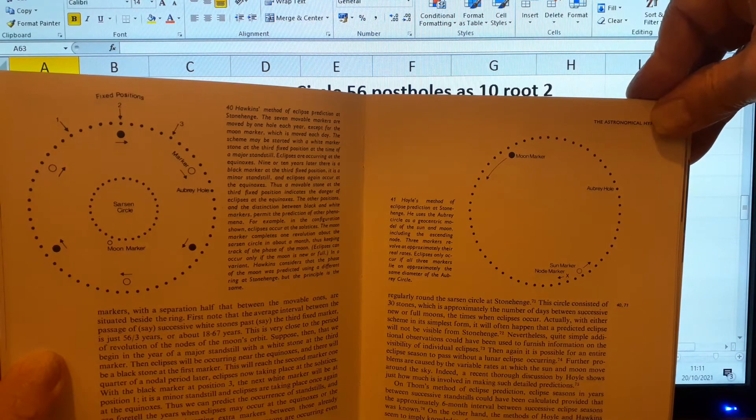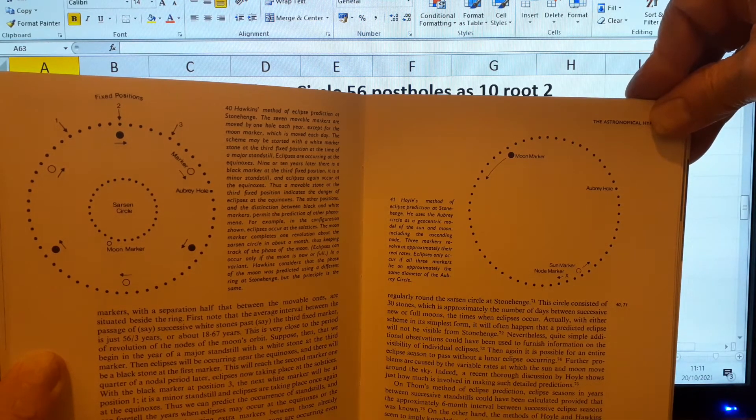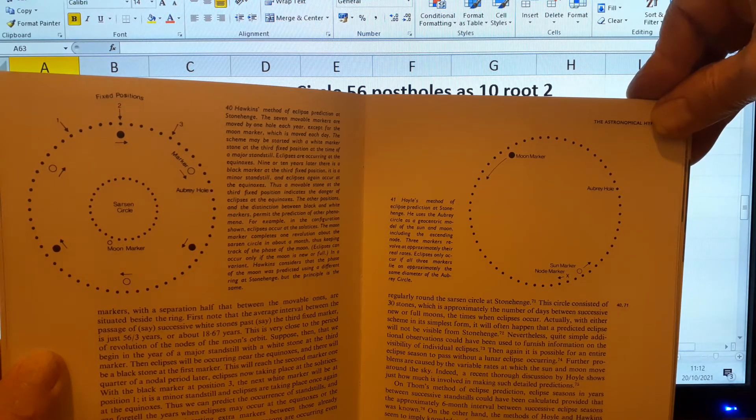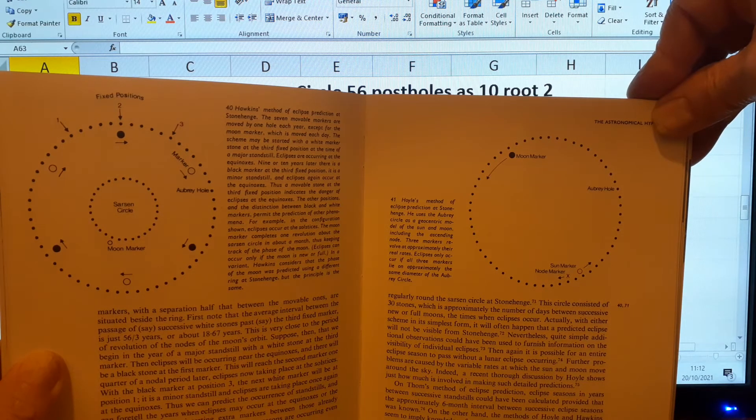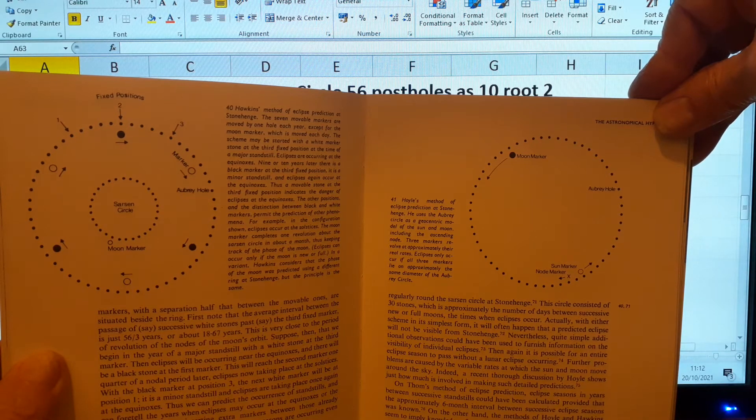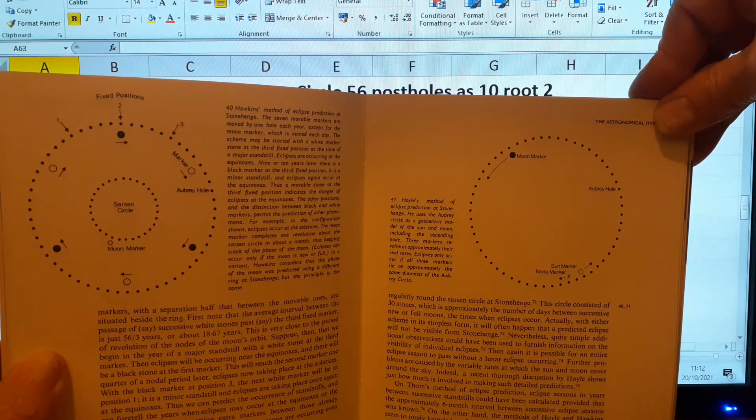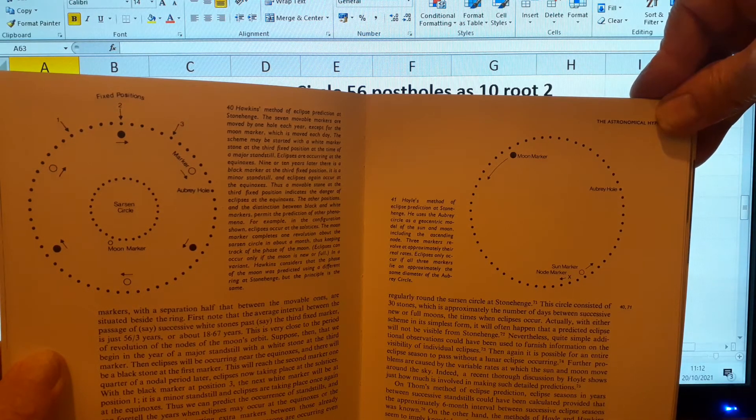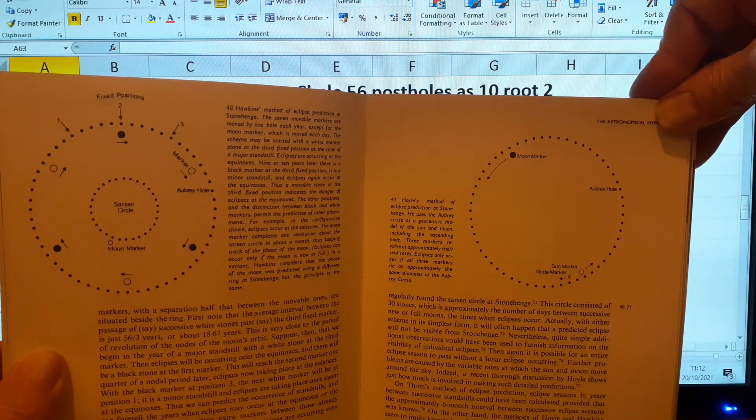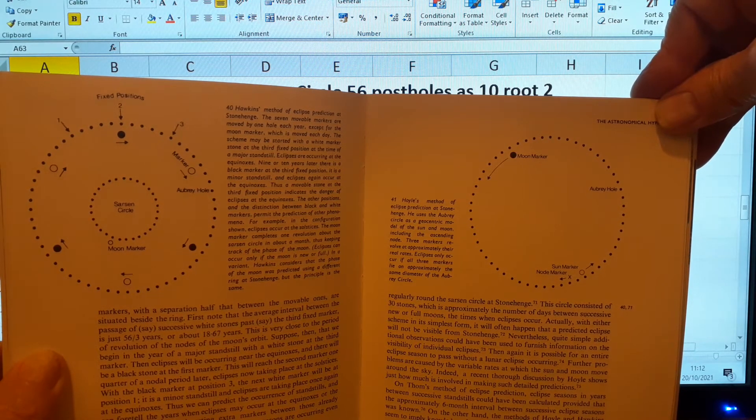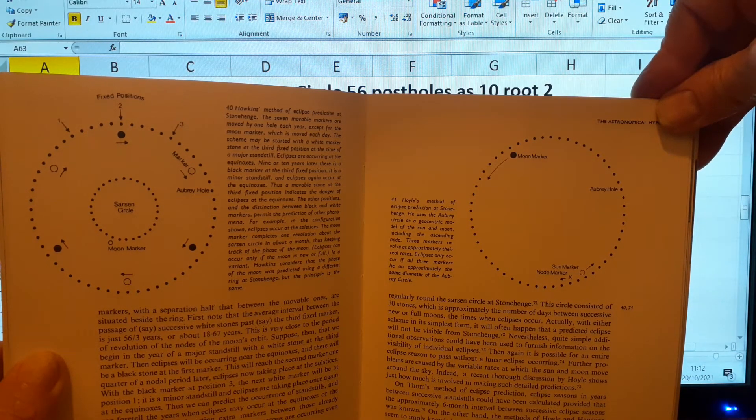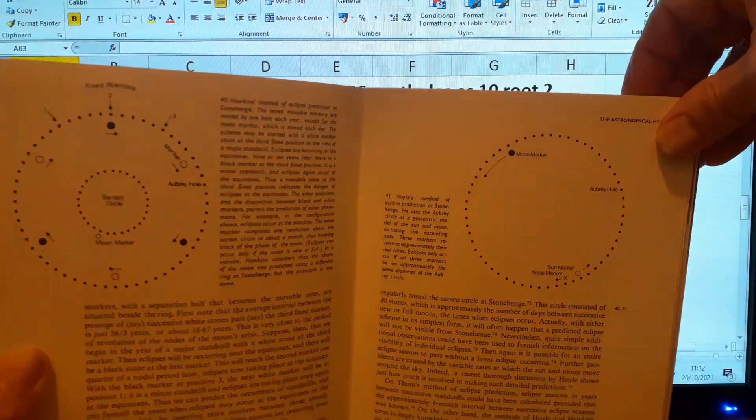So my question to metrologists is, why aren't you looking for the metrology of the eclipse? Because that's all I've been looking for ever since I started doing this work, because that's what Tom tells us they were doing. They were predicting eclipses in Egypt, on Salisbury Plain, at Karnak in Egypt, and in France. And that's that book.